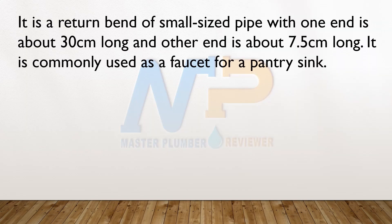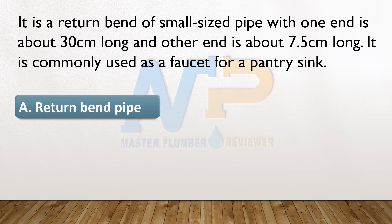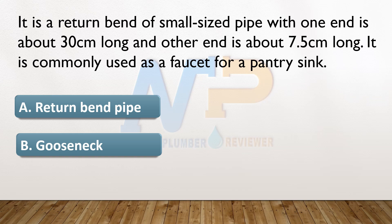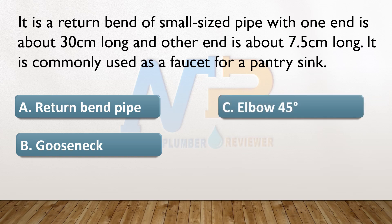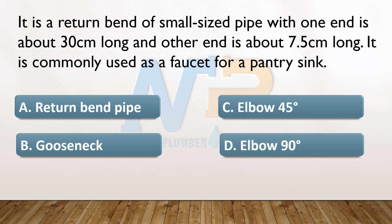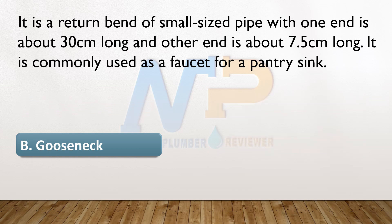It is a return bend of small sized pipe with one end about 30 cm long and other end about 7.5 cm long. It is commonly used as a faucet for a pantry sink. A. Return bend pipe. B. Goose neck. C. Elbow 45 degrees. D. Elbow 90 degrees. The answer: B. Goose neck.